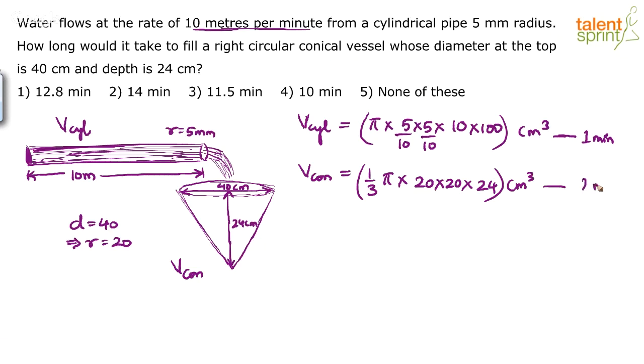Simplify and you will get the answer. Basically, you have to divide - the required time will be equal to the volume of the cone divided by volume of cylinder. Even if you cross multiply, what do you get? This into 1 divided by this. So, volume of the cone divided by volume of the cylinder.